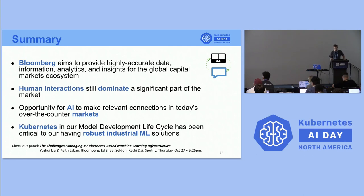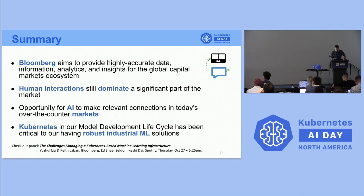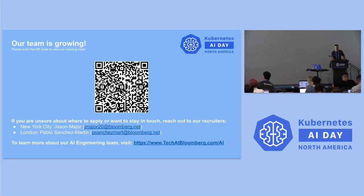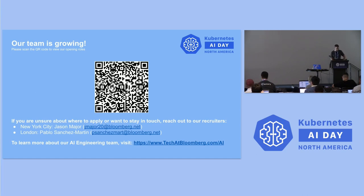Bloomberg aims to provide highly accurate data, information, analytics, and insights for the global capital markets ecosystem. Human interactions still dominate a significant proportion of the over-the-counter market, and there's an opportunity for AI to make relevant connections between humans who operate in these markets. Kubernetes has been instrumental in enabling us to build robust industrial ML solutions and a reliable model development lifecycle. Our team is growing — scan the QR code for open positions in AI and ML Ops, or visit techatbloomberg.com/ai.